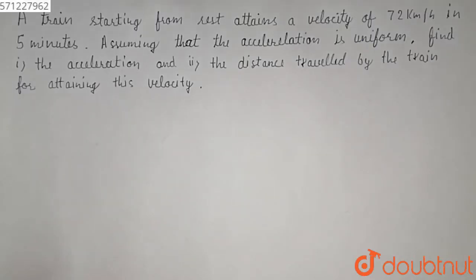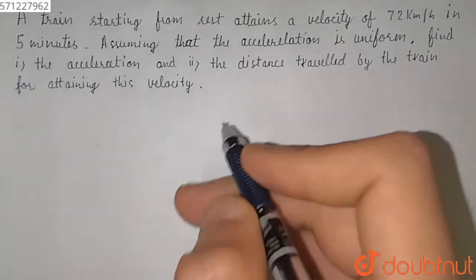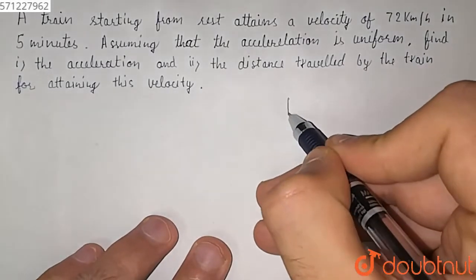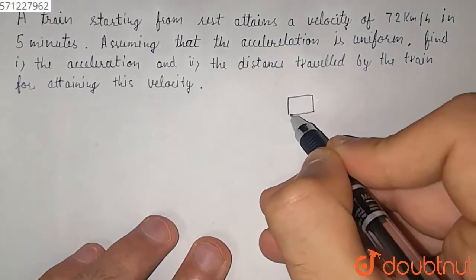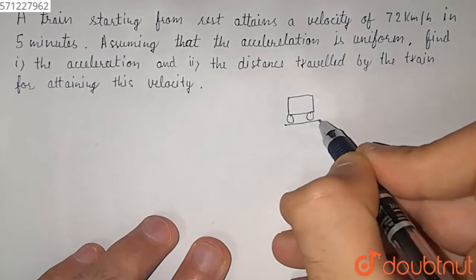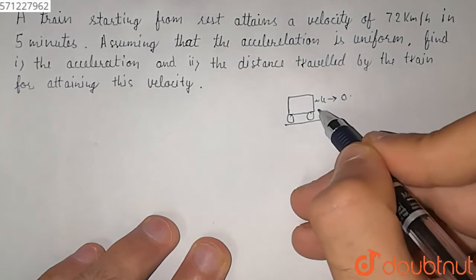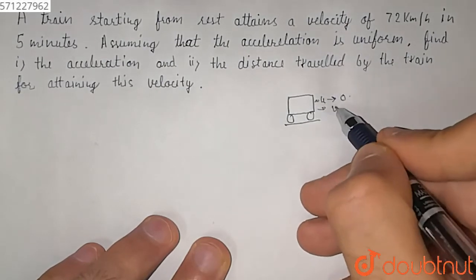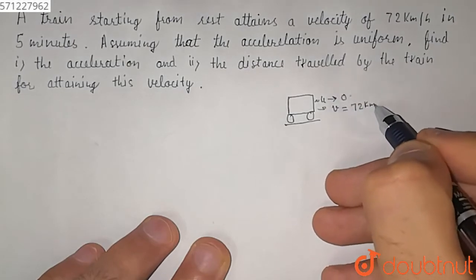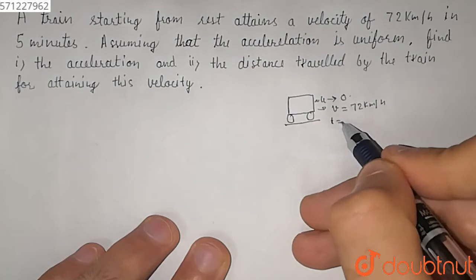Hello, in this question we have given that a train starting from rest attains a velocity of 72 km per hour in 5 minutes. Assuming that the acceleration is uniform, so we have to find the acceleration and the distance travelled by the train for attaining the velocity.